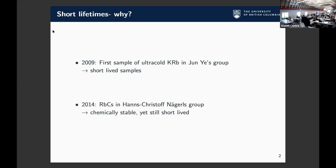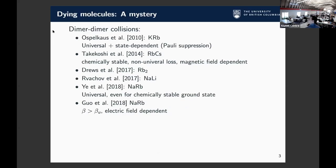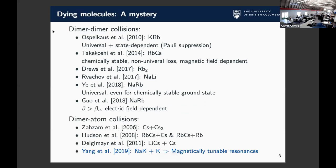Potassium rubidium was known to be chemically unstable, but the first chemically stable molecule was rubidium and cesium in 2014. That was chemically stable, but it still reacted away very quickly. This led to a bit of a mystery — why do these polar molecules decay away so quickly when trapped in an optical trap? There's been a ton of polar molecules made, and also just other homonuclear dimers, and they're all extremely short-lived. There's also some work done on dimer-atom collisions.